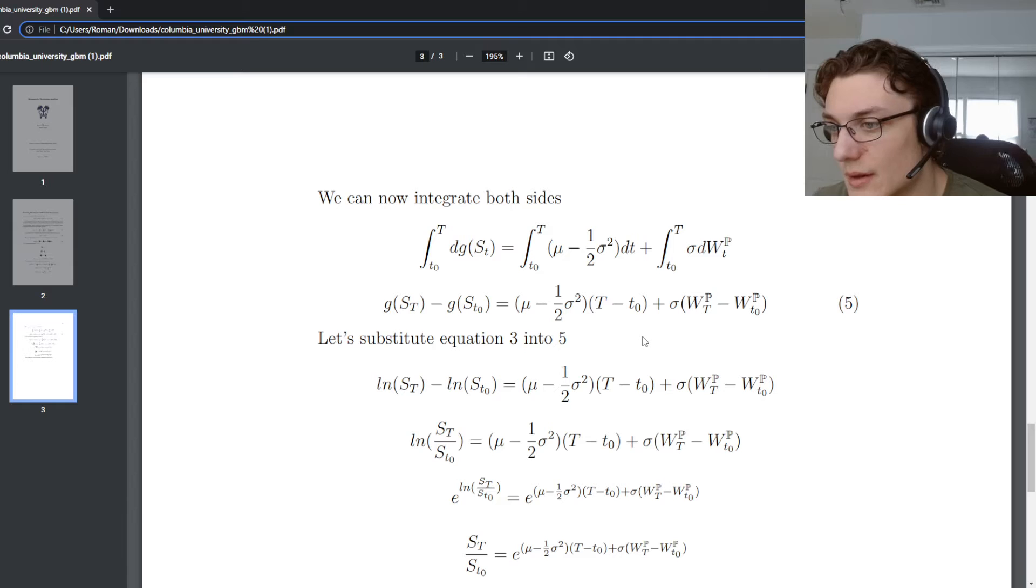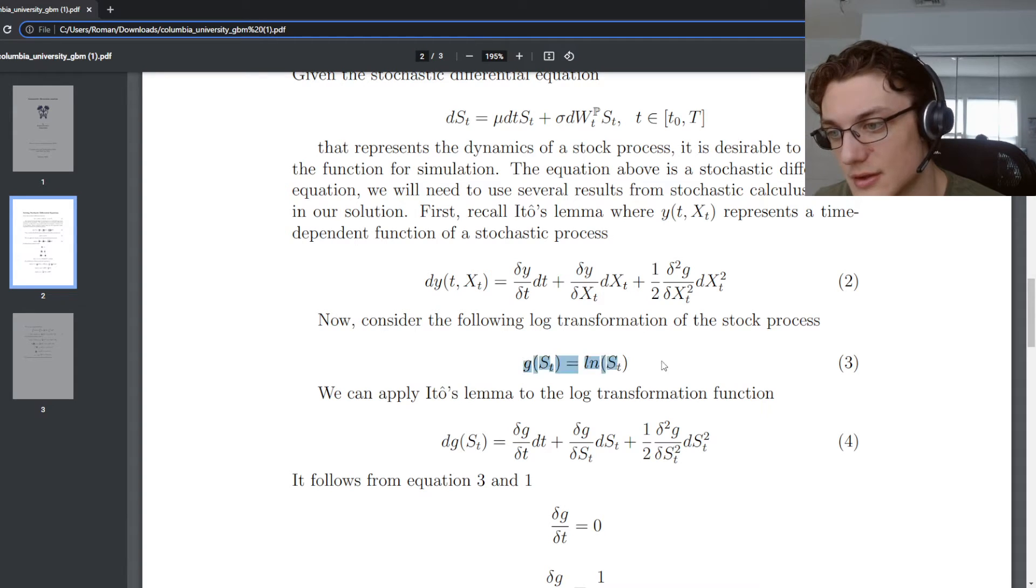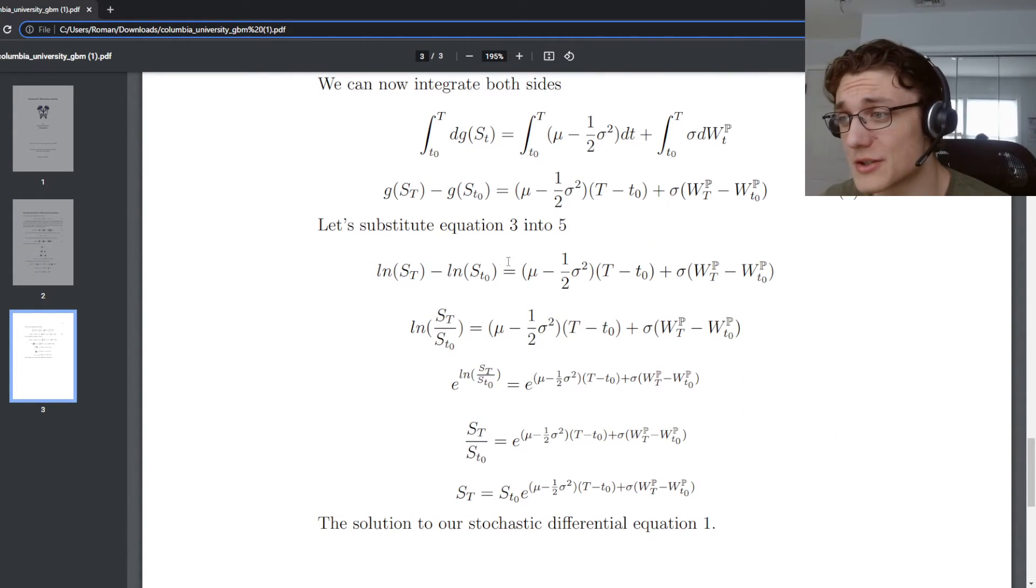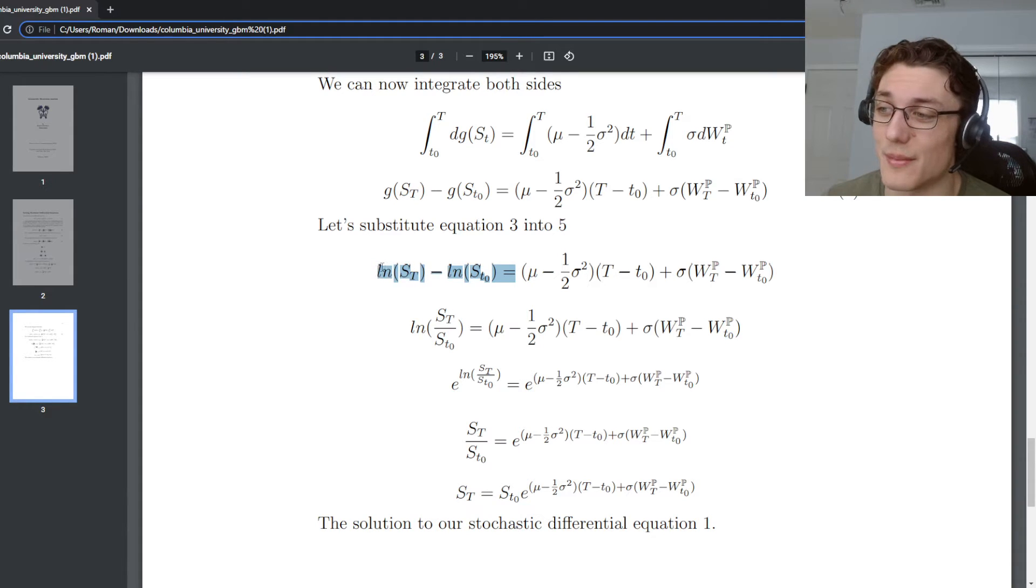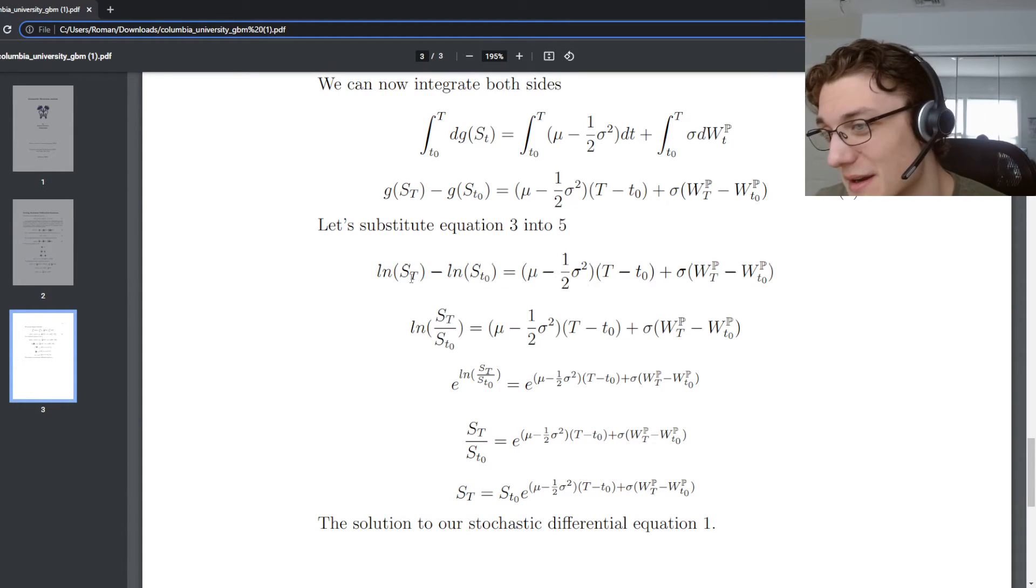If you look at this equation five here, we actually have the representation of g. It's just the log transform of the stock price. So we can actually substitute that in, remember from equation three, it's just the log transformation. So we actually substitute that in, then we get log of S cap t less log of S sub t zero is equal to all this nonsense on the right side. And this is from basic rules of logarithms. If we have log less a log, then we can just take the fraction.